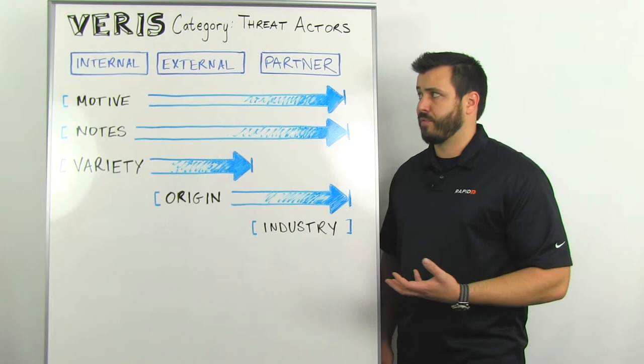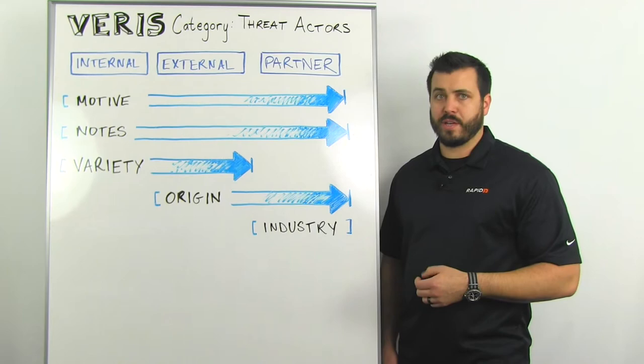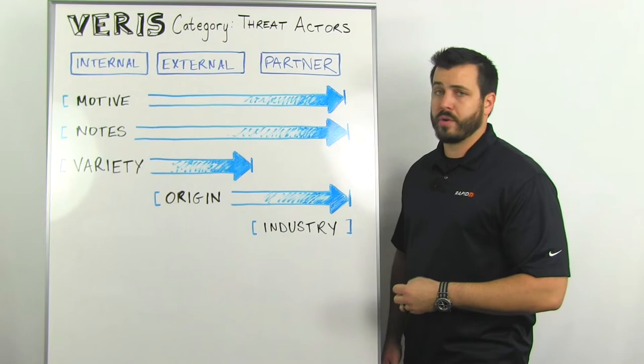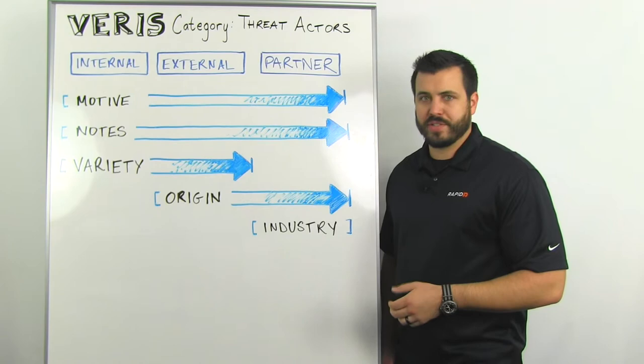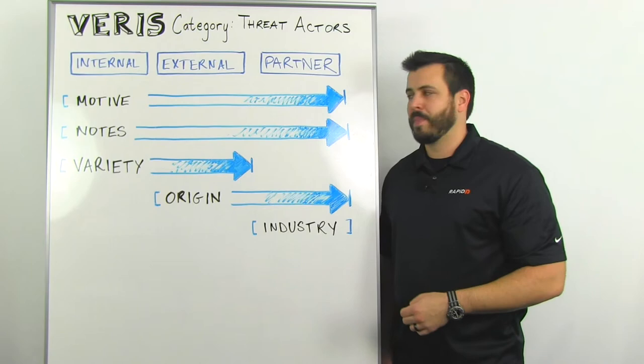For internal and external threat actors, it's important to define the variety — what kind of variety of threat actor this was. This could be an activist, an auditor, a former employee, or a competitor. This could also be force majeure — whether that's an act of nature, an act of God, or complete circumstance. The bottom line is the motive of nature is unknown, so that seems to kind of follow.